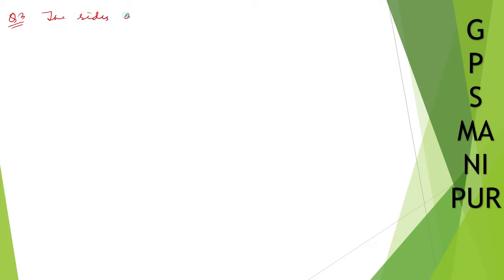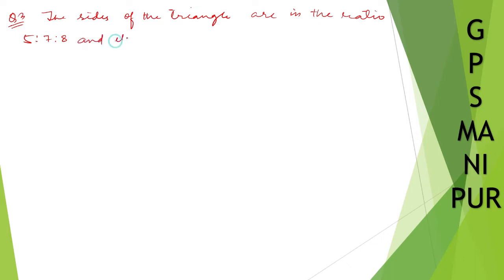We are doing Exercise 12.1, question number three. The sides of the triangle are in the ratio 5 is to 7 is to 8, and its perimeter is 300 centimeters. Find each area. Now, solution.